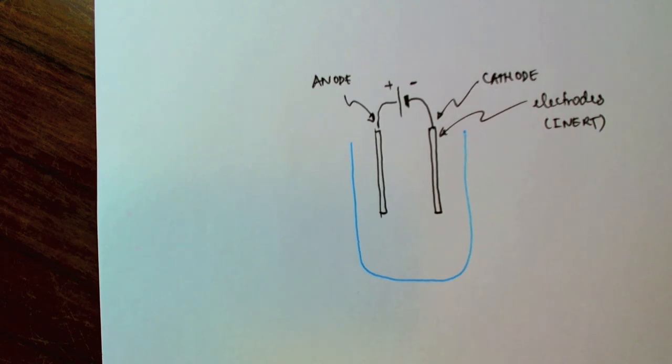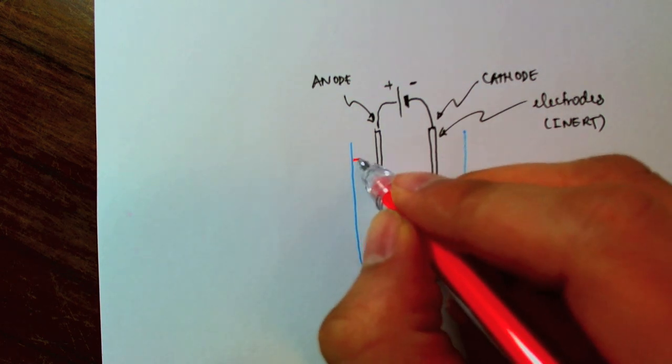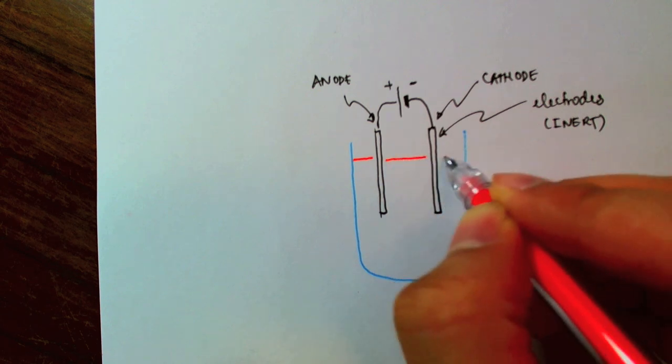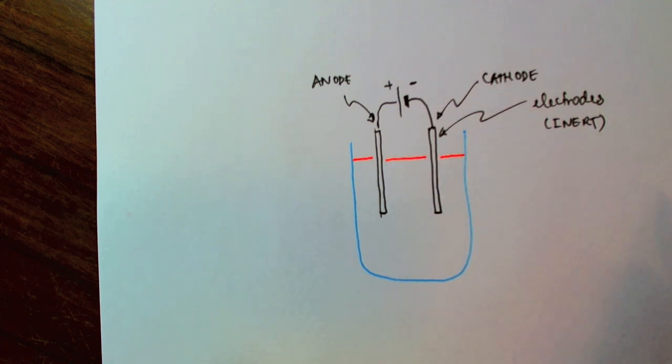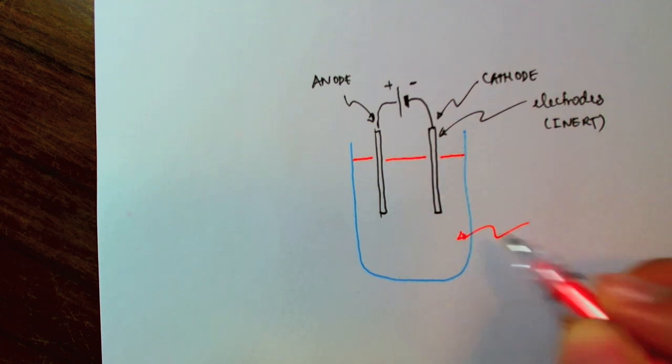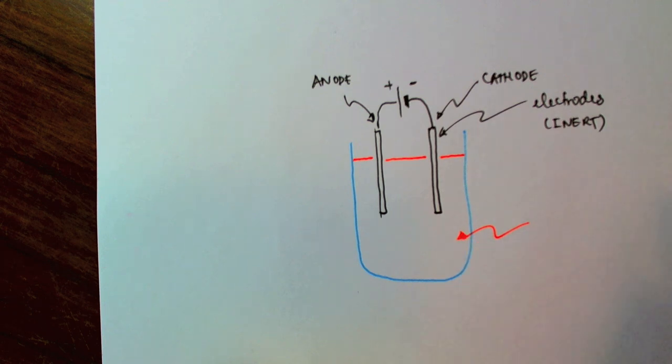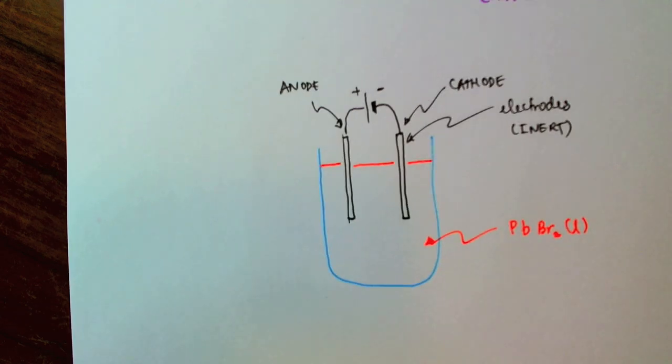And now I'm going to fill this beaker or container with the solution that I want to break down. In this case, I'm going to use a solution, or rather, I'm going to use molten lead bromide. So, this is lead bromide in its molten state.